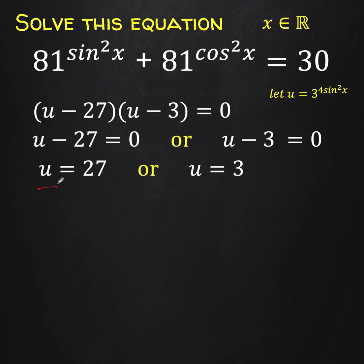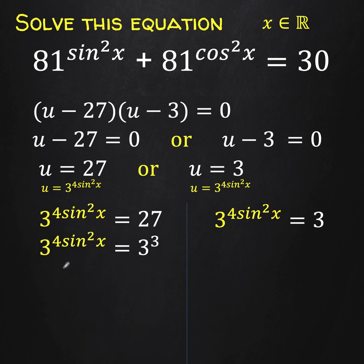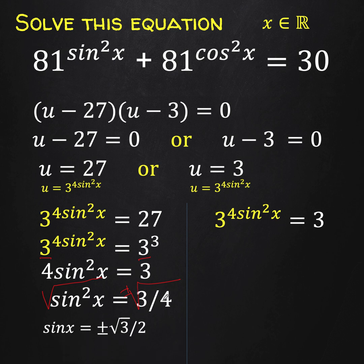Now, what is the value of u? We know that u equals 3 raised to 4 sine squared x. Substituting back: 3 raised to 4 sine squared x equals 27, which can be written as 3 cubed. Since the bases are equal, their exponents are also equal, giving 4 sine squared x equals 3. Dividing both sides by 4 and taking the square root, we get sine x equals plus or minus square root of 3 over 2.